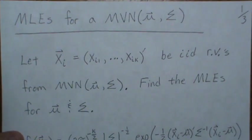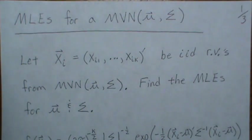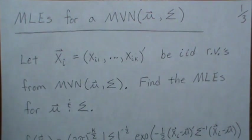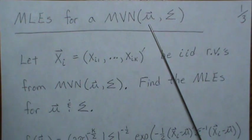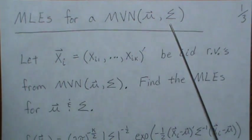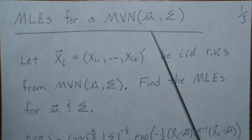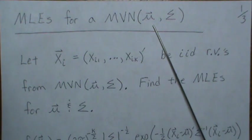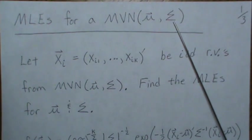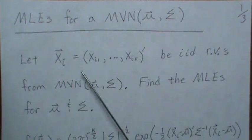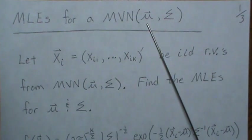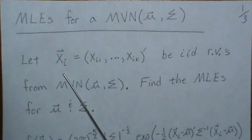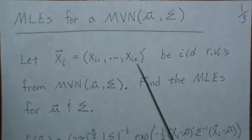Hello, in this video we calculate or derive the MLEs for a multivariate normal distribution with parameters mu and sigma, where mu is a vector and sigma is a matrix. We're going to let it be a k-dimensional, k by k, k by one.